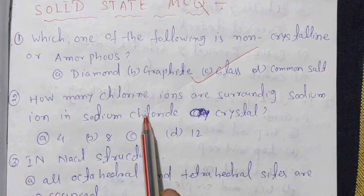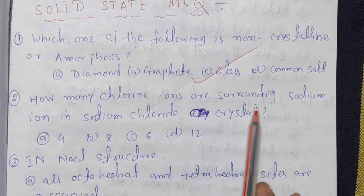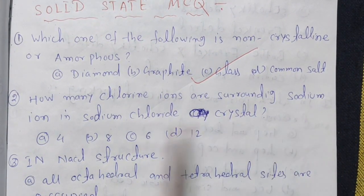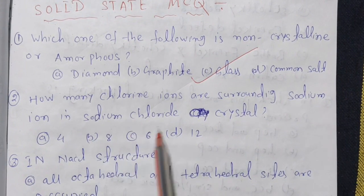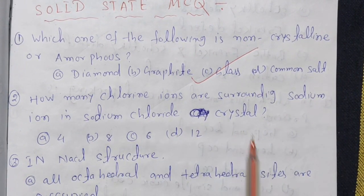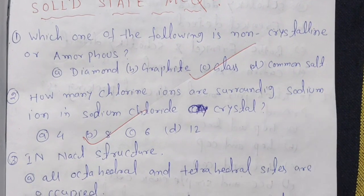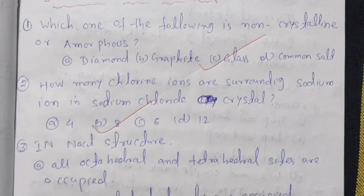How many chlorine ions are surrounding sodium ions in the sodium chloride crystal? The answer is 6, which means option B.